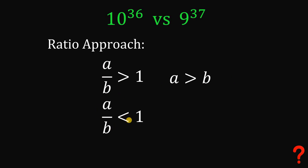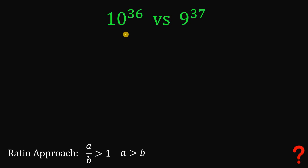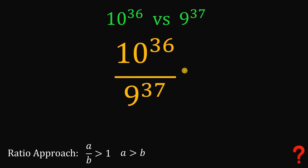And in reverse, if we get A over B is less than 1, then we can say that A is less than B. So using this ratio approach, we will answer this question. What we're going to do is to get the ratio of 10 raised to the power of 36 over 9 raised to the power of 37, like this.